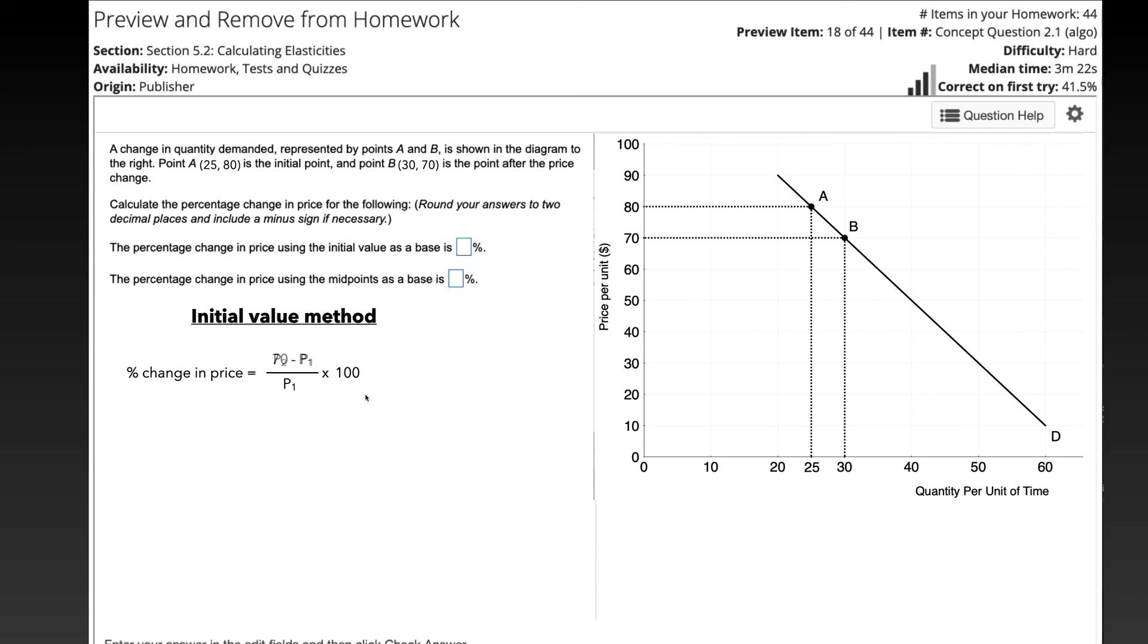So we can put that information in. The new price is 70, so that's P2, relating to point B. The initial point price was 80, so that's point A, and then we divide by the initial price of 80, and we multiply that by 100, and that gives us a negative 12.5% change in the price using the initial value method.